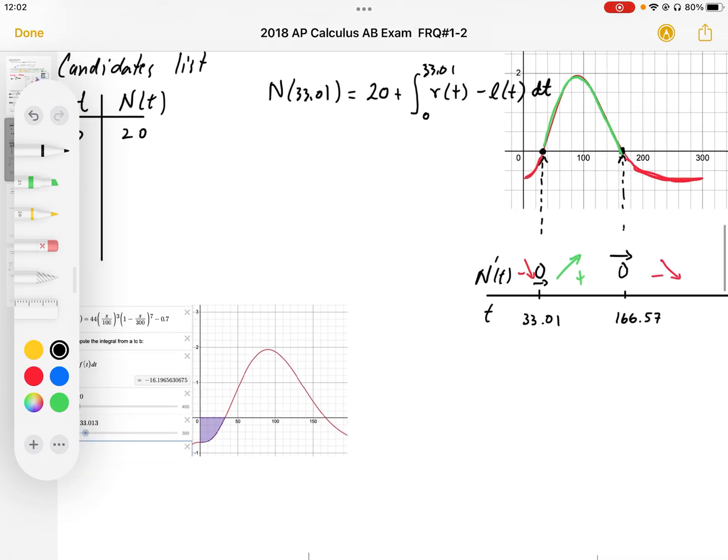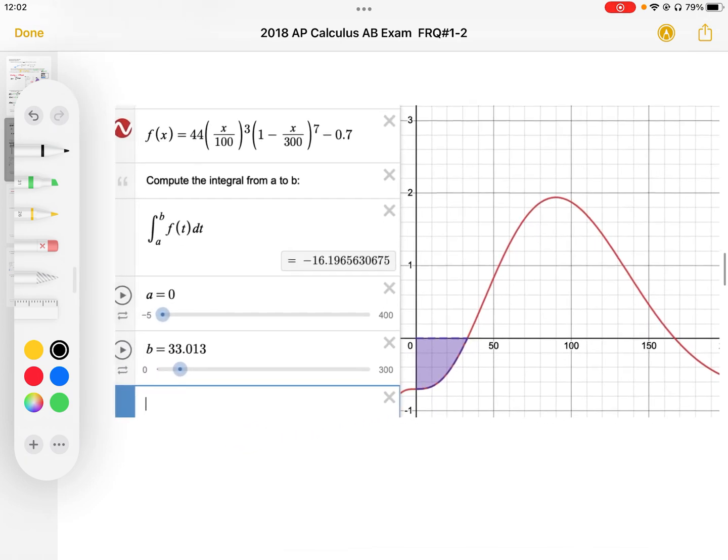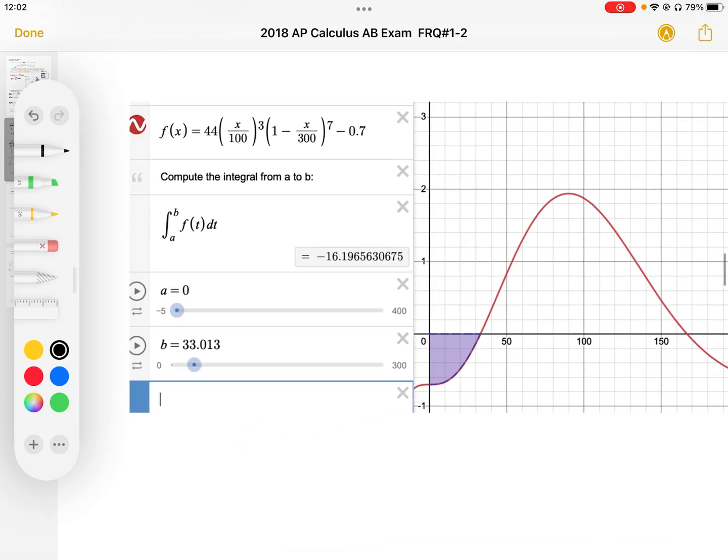When I graph that, I'm going to use the exact same graph. I want to find the area underneath the curve from 0 to 33.01, and that area works out to be negative 16.19656. So that's the number of people who have left the line from the very beginning.